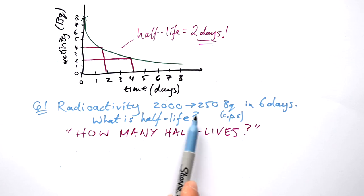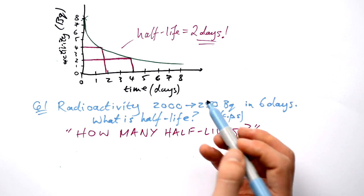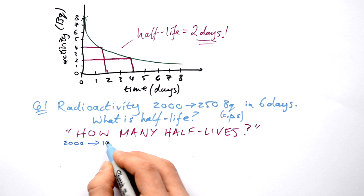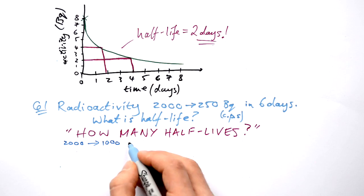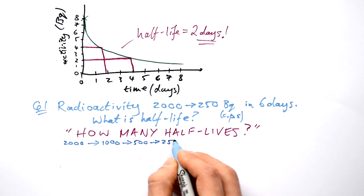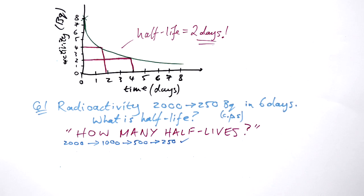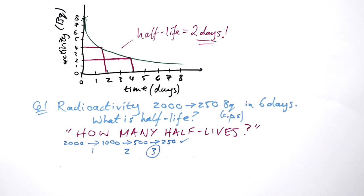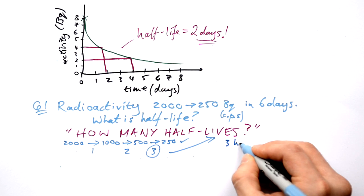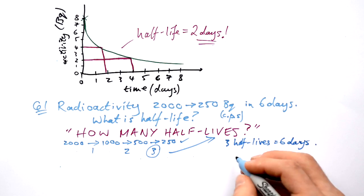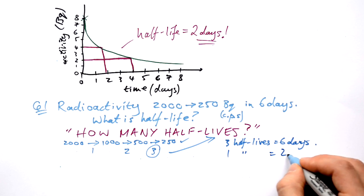How many half-lives have we gone through to go from 2,000 to 250? We started at 2,000. Half it once: we end up at 1,000. Half it again: we end up at 500. Once more: we've got to 250. How many half-lives? One, two, three. Three half-lives. If three half-lives is six days, how long is one half-life? It's going to be two days.